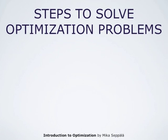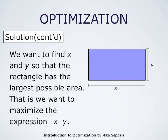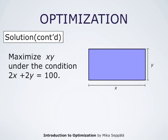From the perimeter condition we get that 2 times X plus 2 times Y must equal 100. I leave out the unit in this computation and add it at the end. The next step is to create equations that describe this situation. One of these will define the function to be optimized. In this case we have to optimize the dimensions of the rectangle, so we need to maximize X times Y, which is the area of the blue rectangle, under the condition 2 times X plus 2 times Y equals 100.